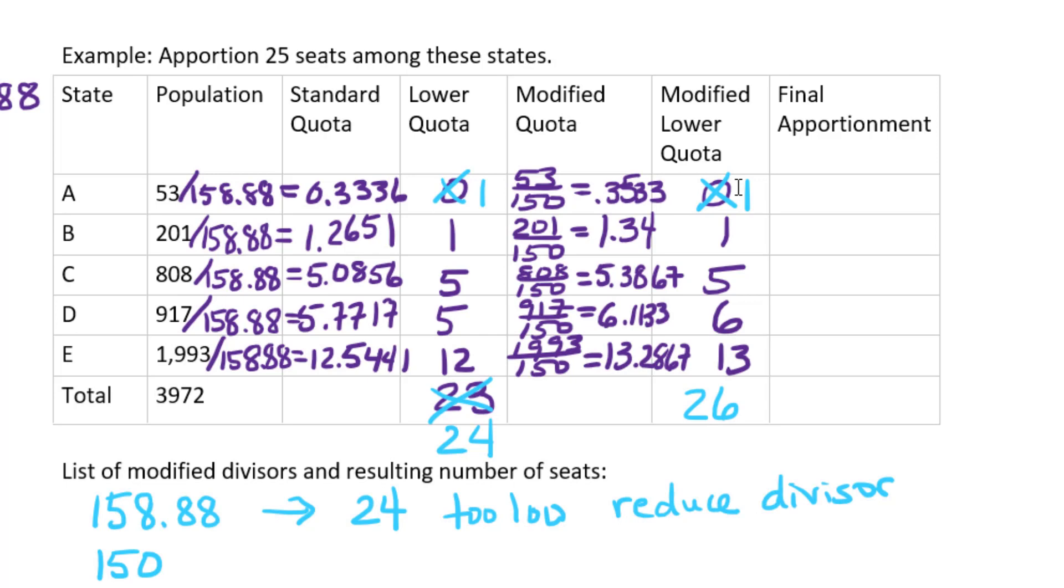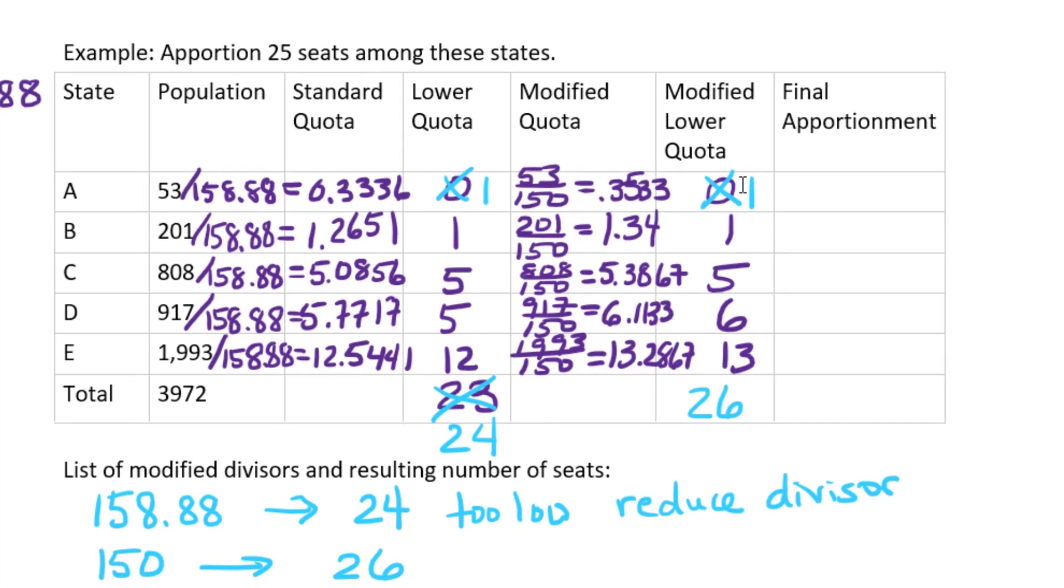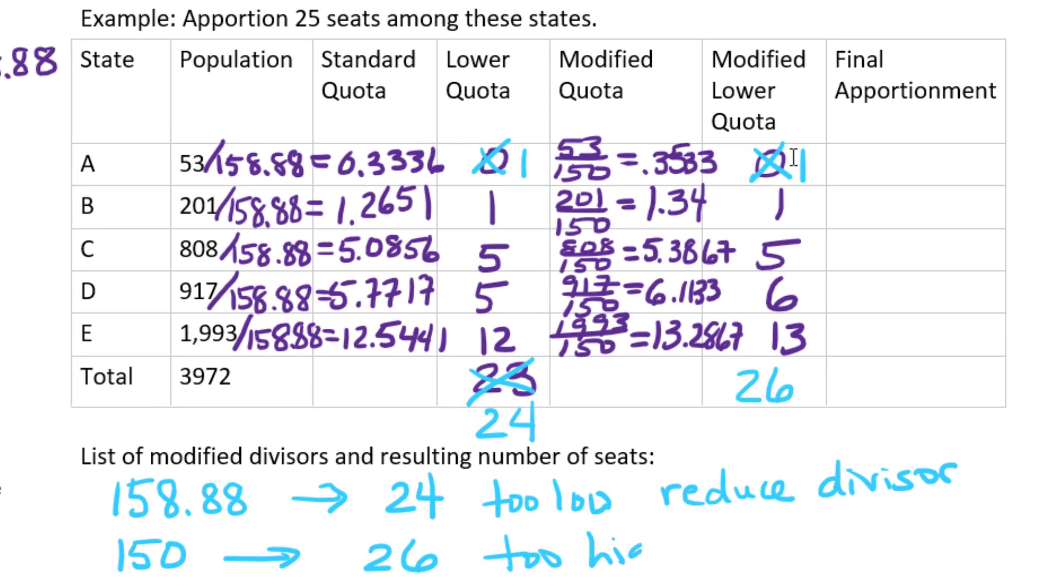Unfortunately, we only have 25 seats to hand out, so I'm going to make a note that this resulted in 26, which was too high, and then I'm going to increase my divisor because if I divide by a larger divisor, it'll result in a smaller amount.